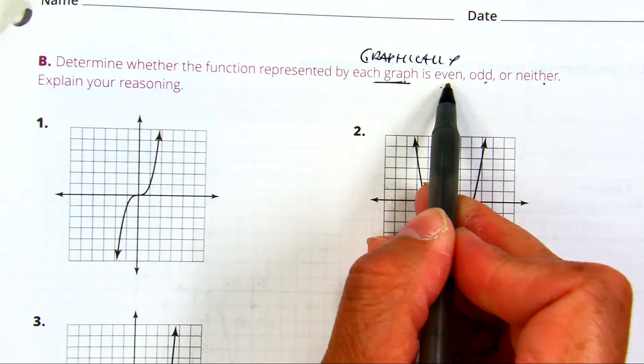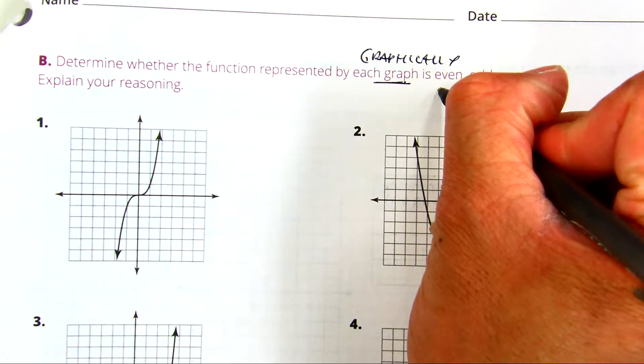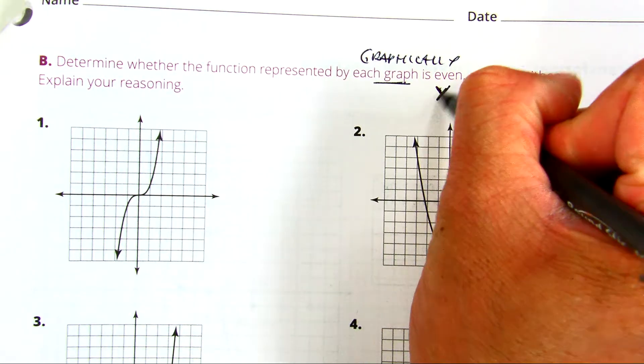When you think about even, you're thinking about where it's rotated. It's rotated about a line evenly, so the y-axis.